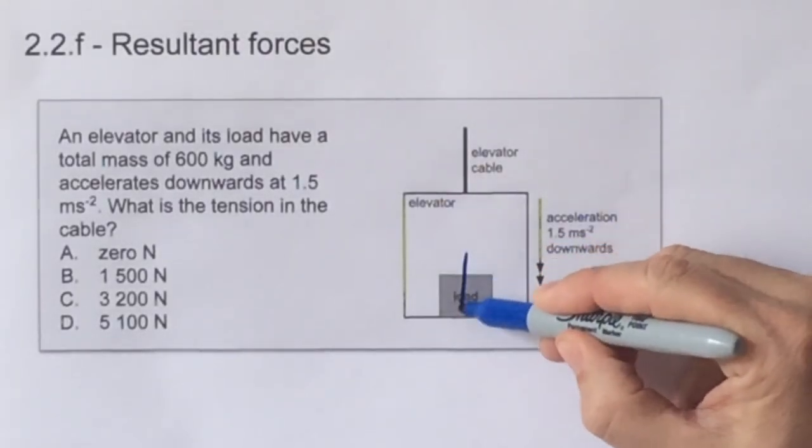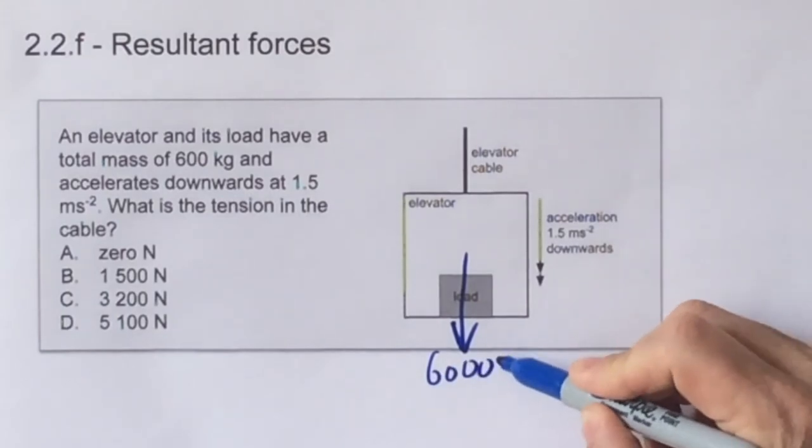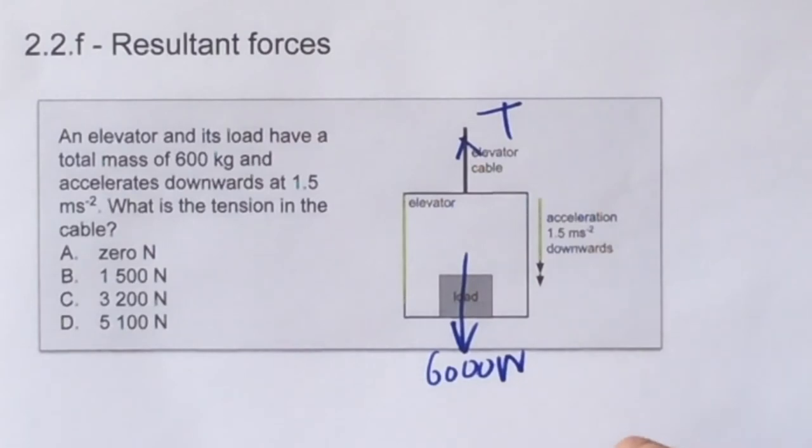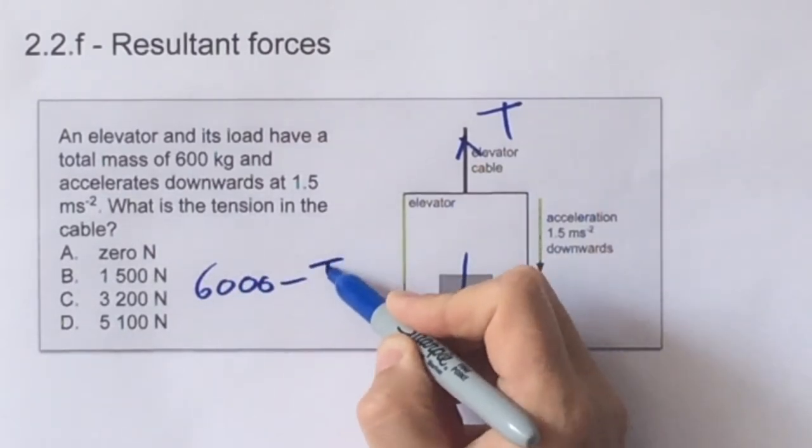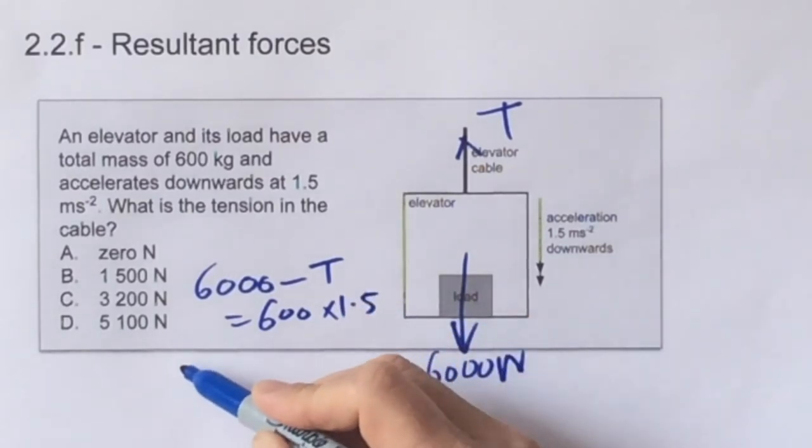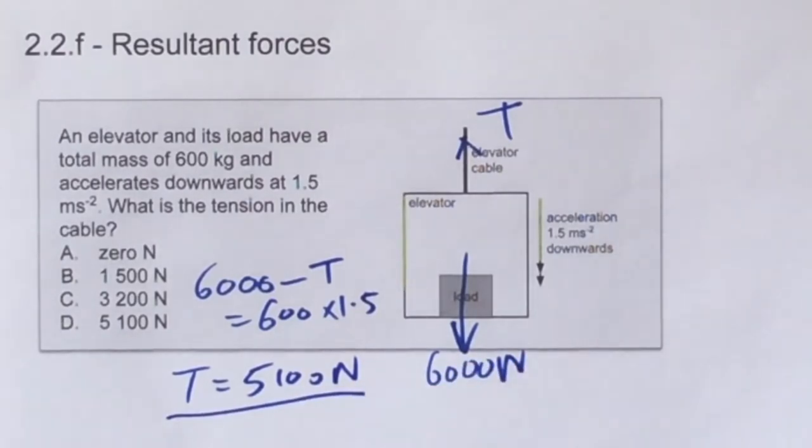First we draw the free body diagram with the weight 6000 newtons downwards, and the tension in the elevator cable upwards is T. Down is positive, and therefore the resultant force is 6000 minus T. And we equate that to 600 times 1.5, F equals MA, and the tension is therefore 5100 newtons. The answer is D.